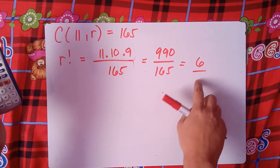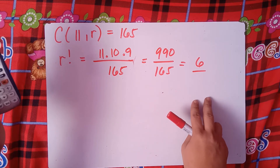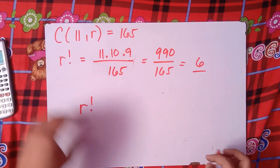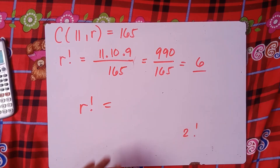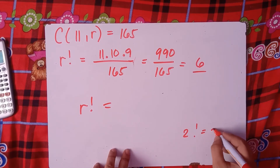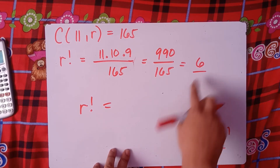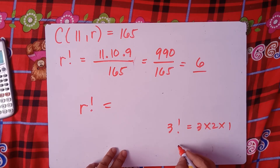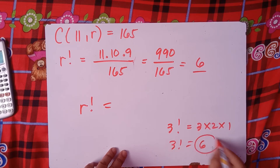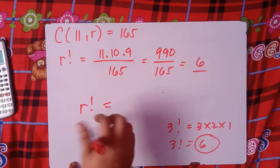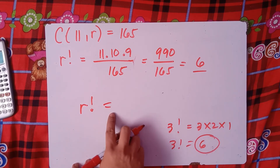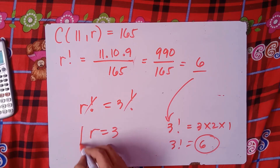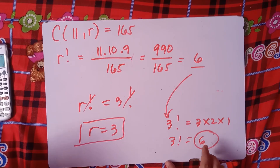We need to find the factorial that equals 6. Starting with 2 factorial: 2 × 1 = 2, not 6. We try 3 factorial: 3 × 2 × 1 = 6. So 3 factorial equals 6. We set r factorial equal to 3 factorial, cancel the factorial notation, and our r equals 3. That's how you find the value of r in combinations.